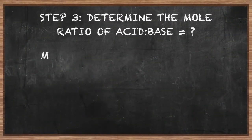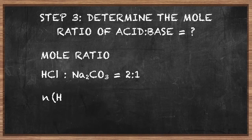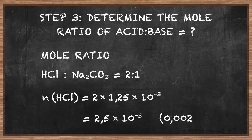Step 3: the mole ratio of acid to base is 2 moles of acid to every 1 mole of base. 1.25 × 10⁻³ moles of sodium carbonate react completely with twice as many moles of hydrochloric acid. The number of moles of hydrochloric acid in 16 cm³ of HCl is therefore 2.5 × 10⁻³ mol.